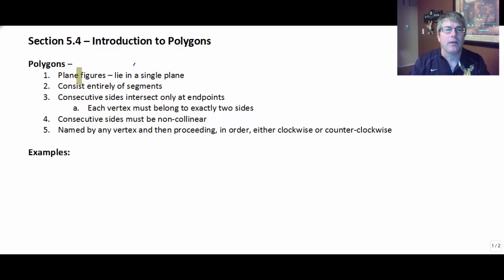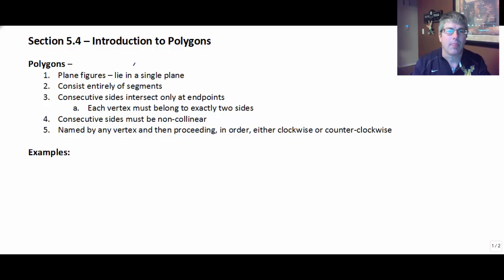Polygons have some properties. One is that they are plane figures — that means they lie in a single plane. Notice 'plane' is spelled P-L-A-N-E, not A-I-N. They consist entirely of segments. The consecutive sides intersect only at endpoints, so each vertex must belong to exactly two sides, and the consecutive sides must be non-collinear.